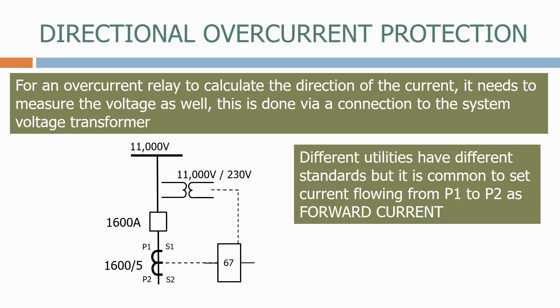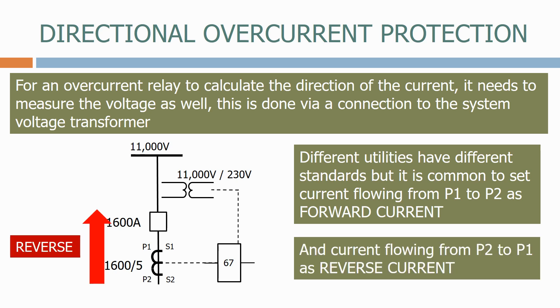Different utilities have different standards, but it is common to set current flowing from P1 to P2 as forward current, and current flowing from P2 to P1 as reverse current.